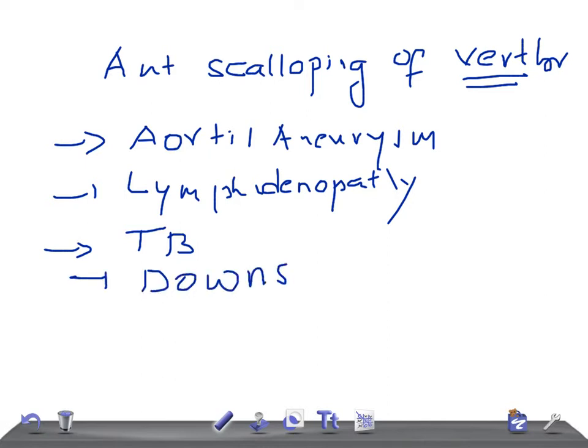So what are the causes for anterior scalloping of vertebra? Aortic aneurysm, lymphadenopathy, tuberculosis, and Down syndrome. Okay guys, thank you so much for watching this video. Take care.